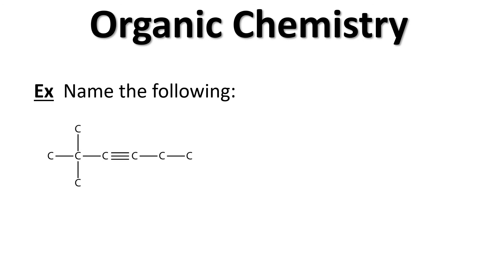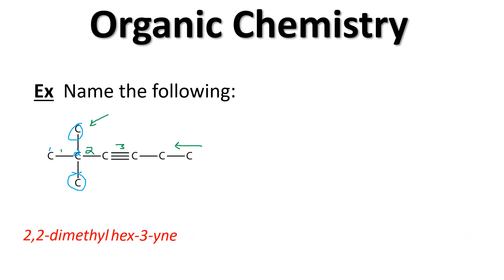In this alkyne naming example, hydrogens aren't shown but assume they're there. Finding the chain and the multi-bond spot: numbering left to right gives the triple bond in the third spot, while going the other direction would give high numbers to the substituents. So we keep the left-to-right numbering. With six carbons in a row and the triple bond in the third spot, that's hex-3-yne. Two methyl groups appear off the second carbon, giving the full name 2,2-dimethyl-hex-3-yne.